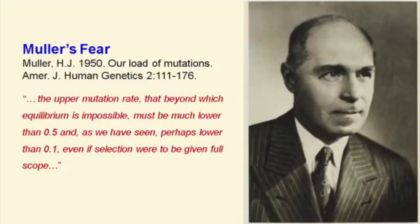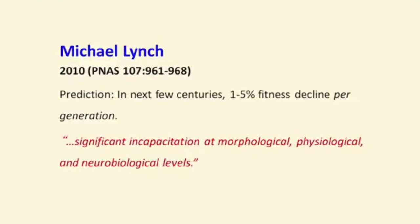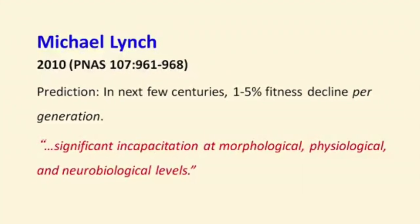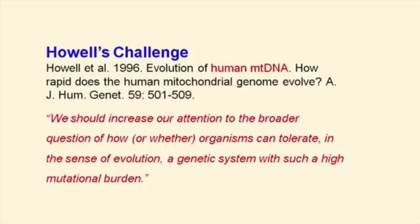The mutation rate is high. The genome is mostly functional. Mutations are mostly deleterious. And natural selection is limited. These facts mean that large-scale evolution has not happened. Mutations and natural selection cannot create novel, complex biological systems, because mutations are overwhelmingly deleterious and natural selection cannot overcome the degeneration.